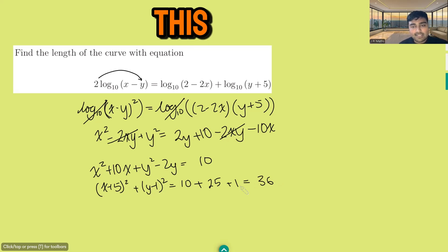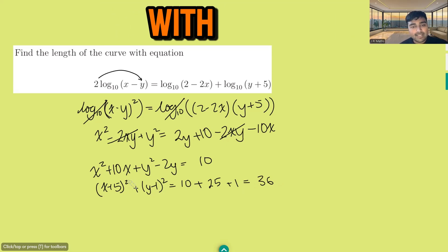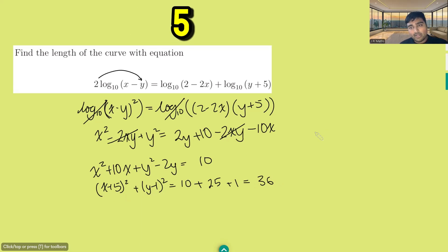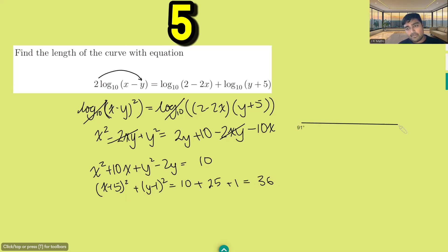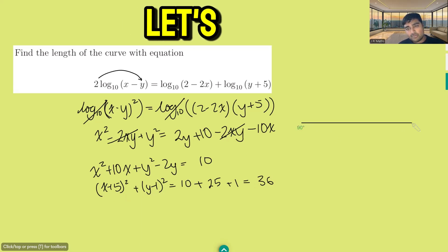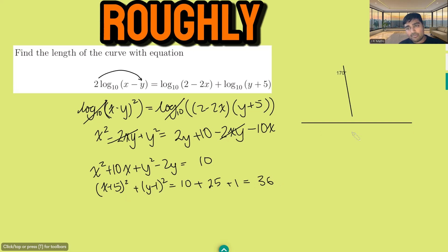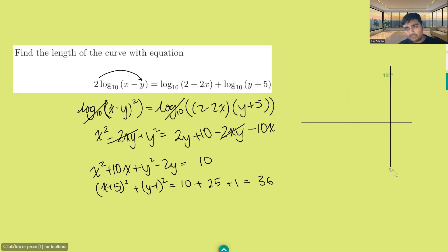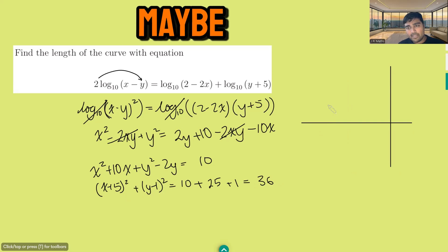So this is the equation of a circle with center (minus 5, 1). Let's draw that roughly — minus 5 maybe here, 1 maybe here.